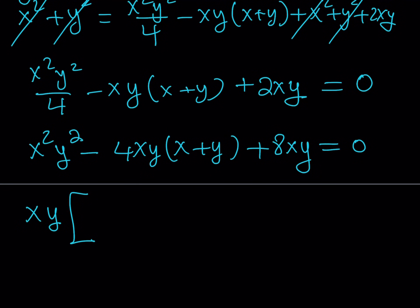And when we do, we should be getting xy from here, because that's xy quantity squared. And then minus, since I took out the xy, I end up with four times the quantity x plus y. And when you take out the xy, you end up with eight here. And the whole thing is equal to zero. Great.